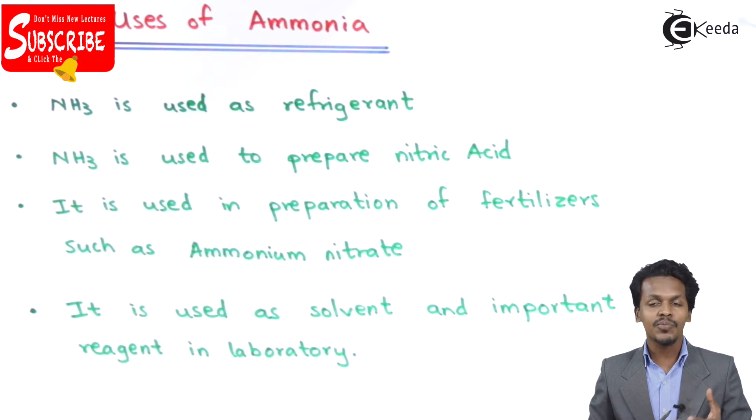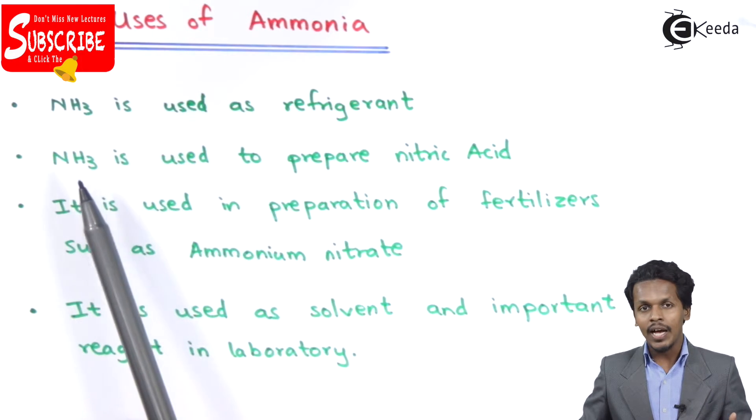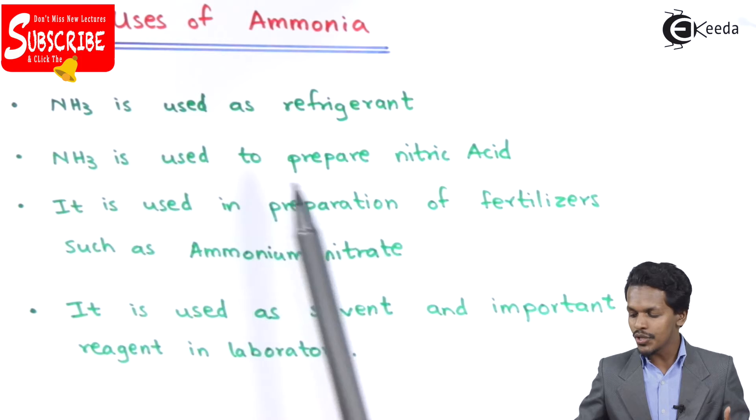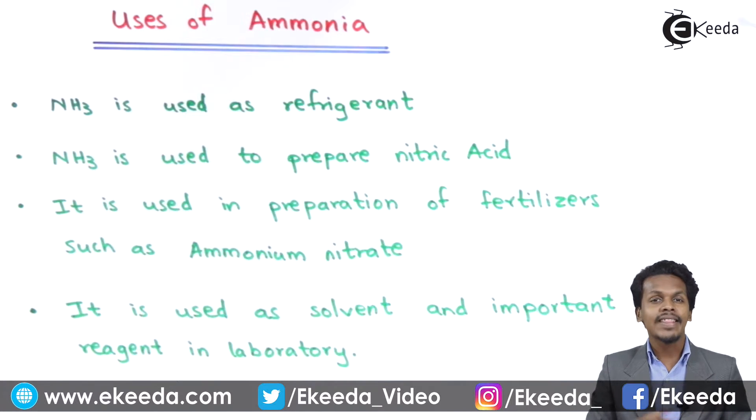The next point is that NH3 ammonia is used to prepare nitric acid, and this process is known as Ostwald's process.